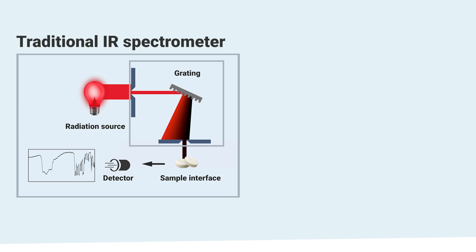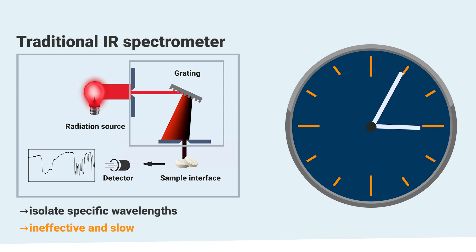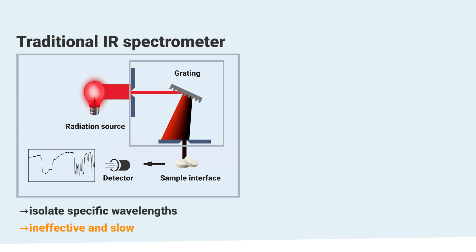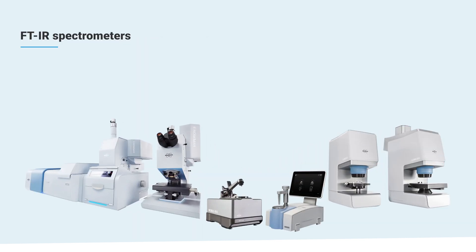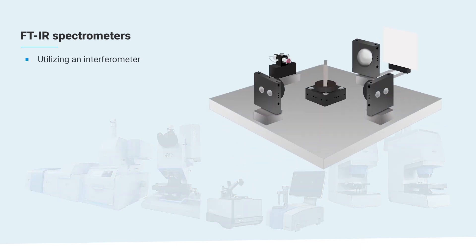While traditional IR spectrometers are able to isolate specific wavelengths for analysis, they are inefficient and slow due to the need to scan each wavelength individually. This is where FTIR spectrometers shine. By utilizing an interferometer, they capture all wavelengths simultaneously, along with better signal-to-noise ratios and superior wavenumber accuracy. Let's try to understand this exciting technology by keeping it simple at first.